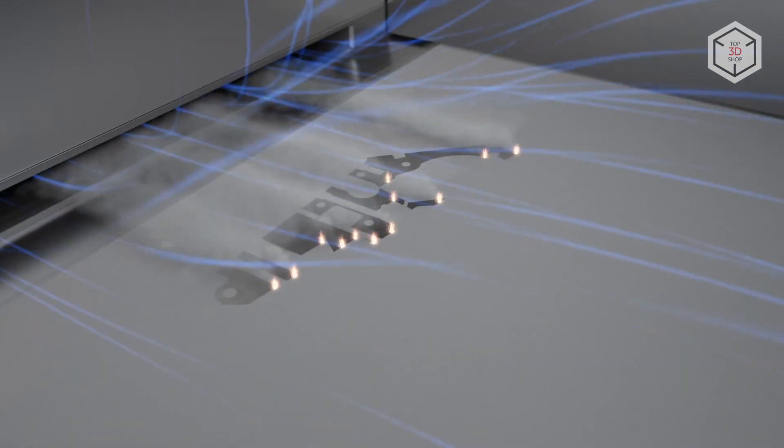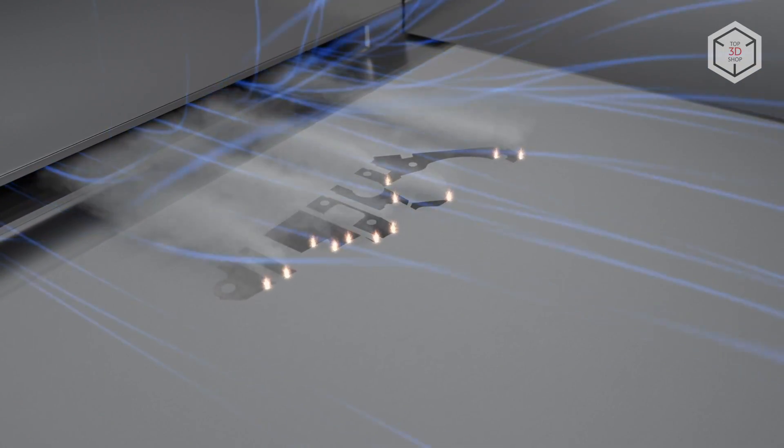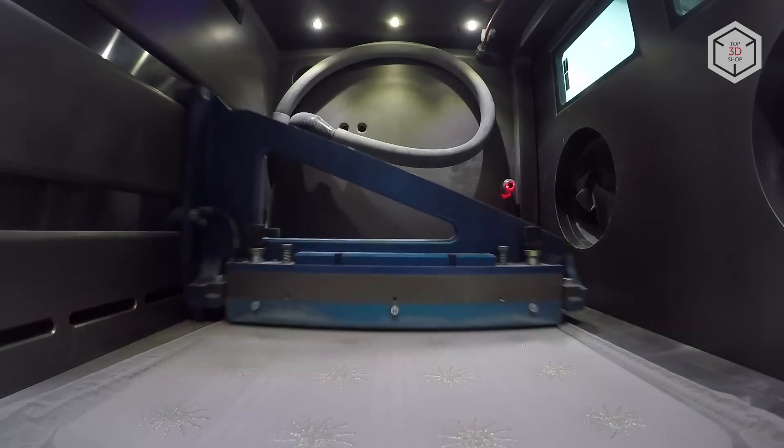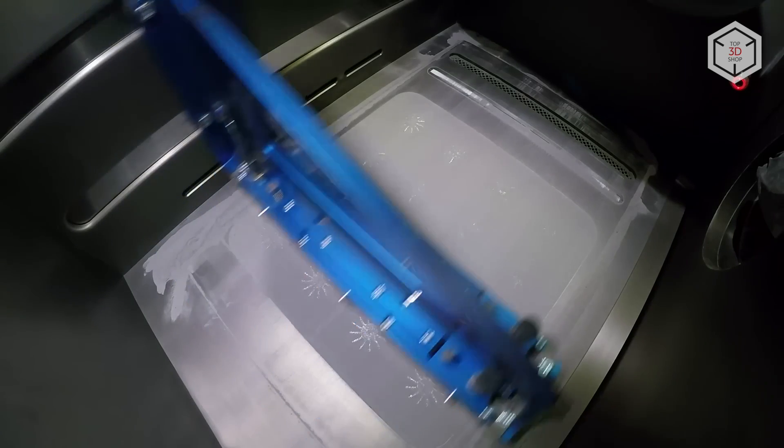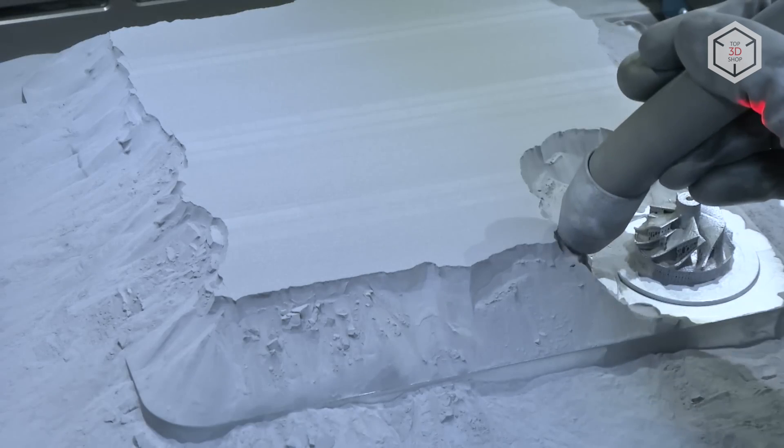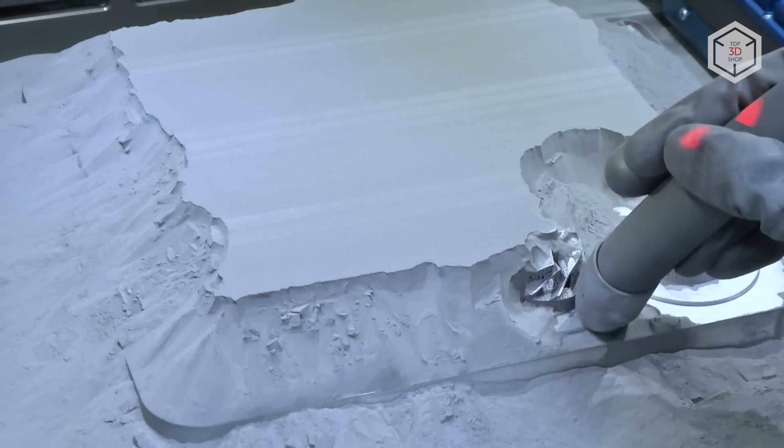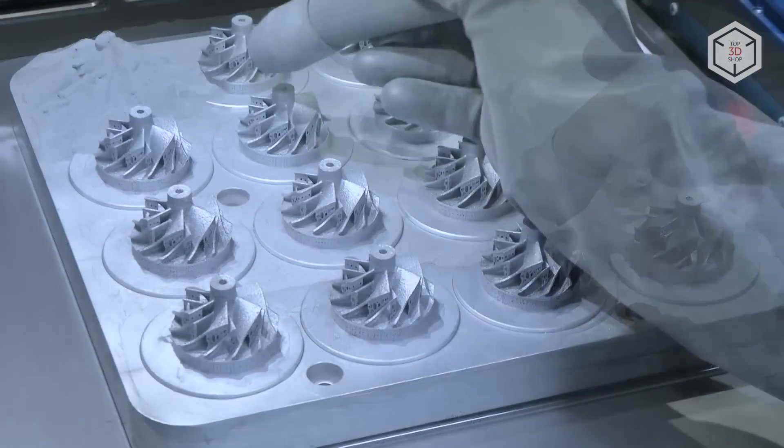When printing, the build chamber of an SLM printer is filled with inert gas, nitrogen or argon. Upon completion of the process, the finished part can be removed from the build chamber after cooling. The latter can take up to several hours in case of large objects. The unused metal powder is collected, cleaned, and used for further printing.